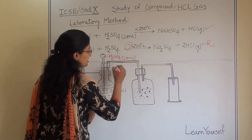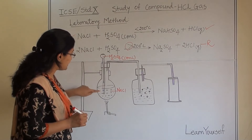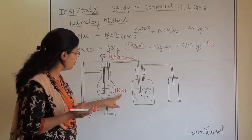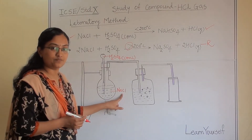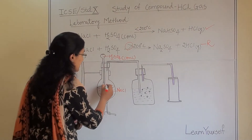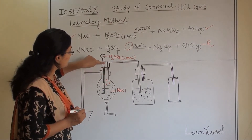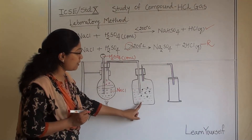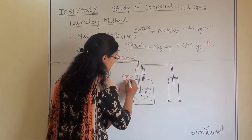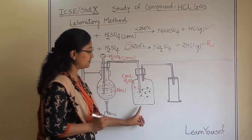From the thistle funnel, concentrated sulfuric acid will be added dropwise into the sodium chloride solution. When these two mix with each other, hydrogen chloride gas will be generated. That gas will travel through another gas pipe into a bottle which is filled with concentrated sulfuric acid.